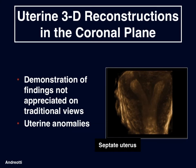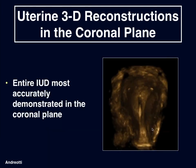Uterine anomalies, IUD location, and other abnormalities associated with the endometrial cavity can be better evaluated in the coronal plane because there are findings not appreciated on traditional views. We can nicely demonstrate a septate uterus in the coronal plane, and we would not be able to demonstrate this diagnostically using 2D imaging. Here we can see in the coronal plane an IUD normally located within the endometrial cavity — the arms within the fundal cavity, the shaft within the mid and upper cavity — the entire IUD demonstrated on a single image, which is not possible with 2D imaging.